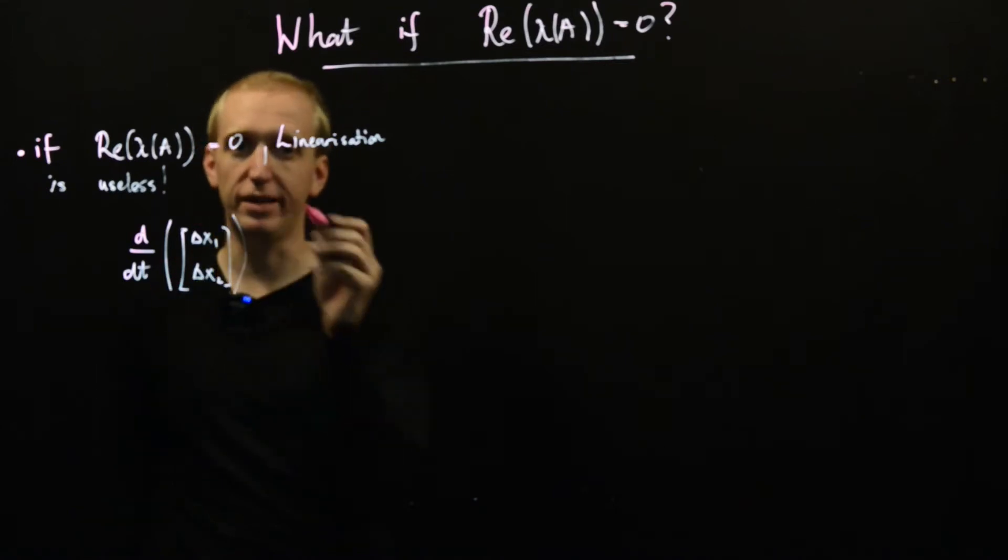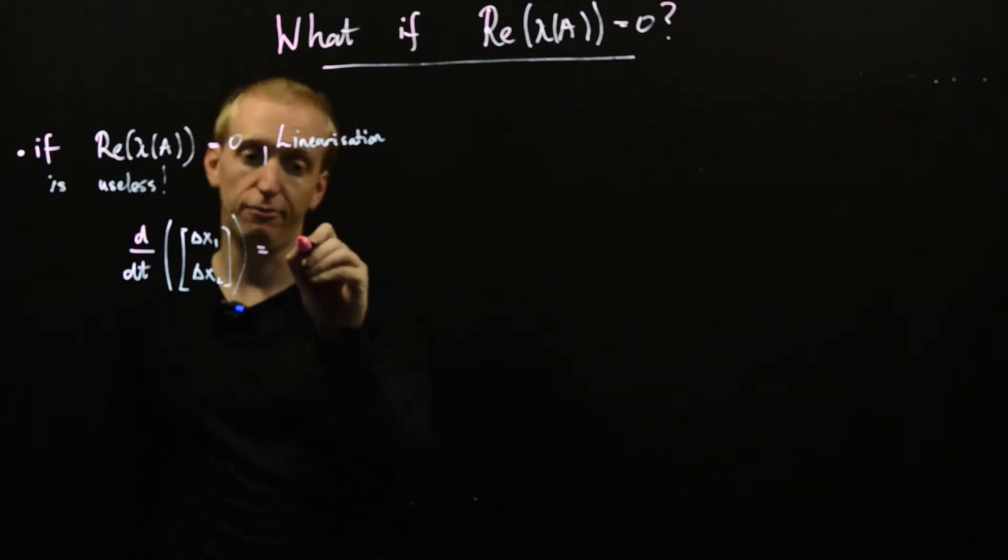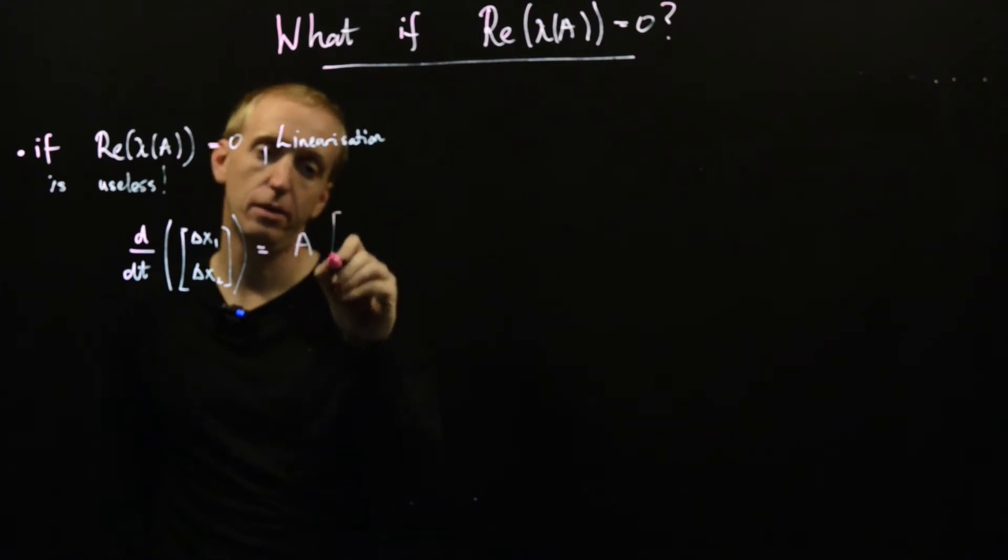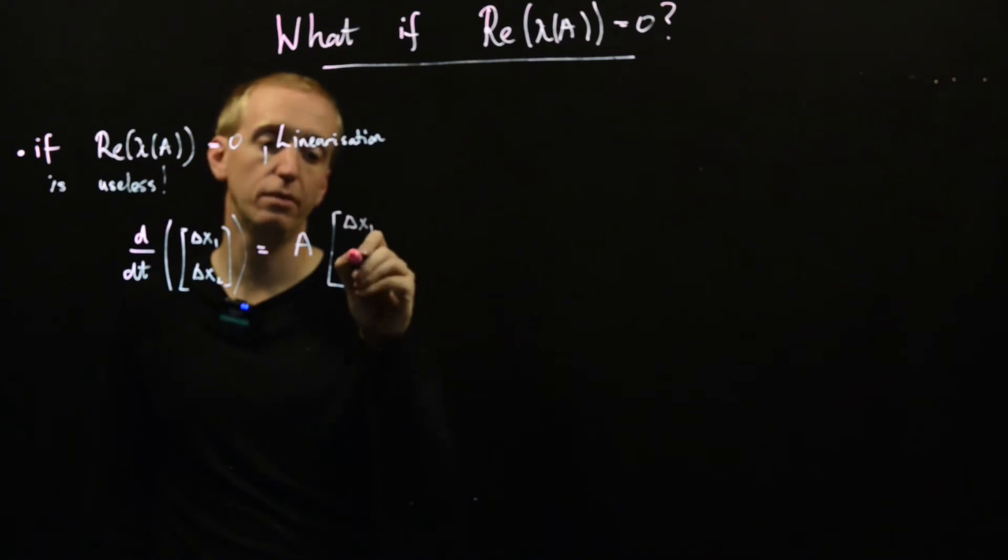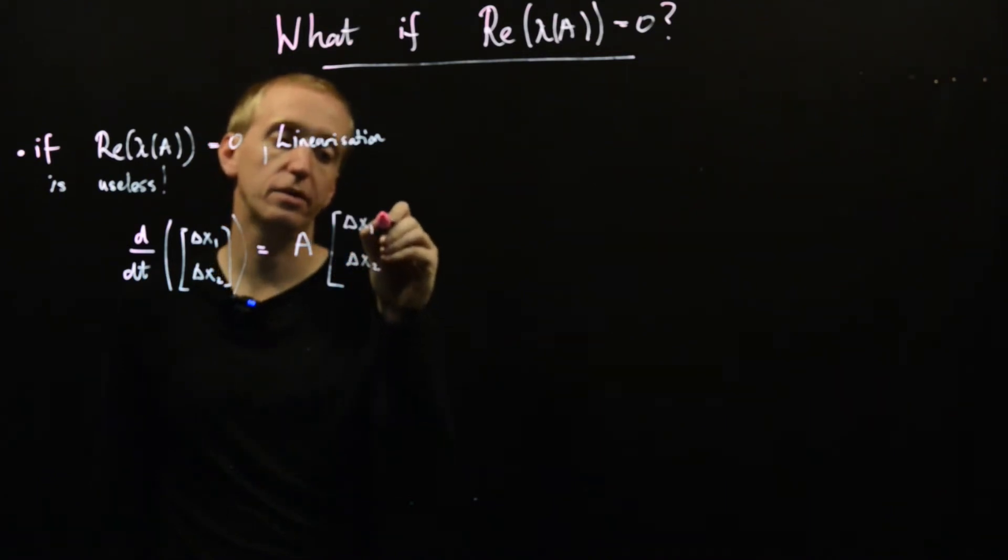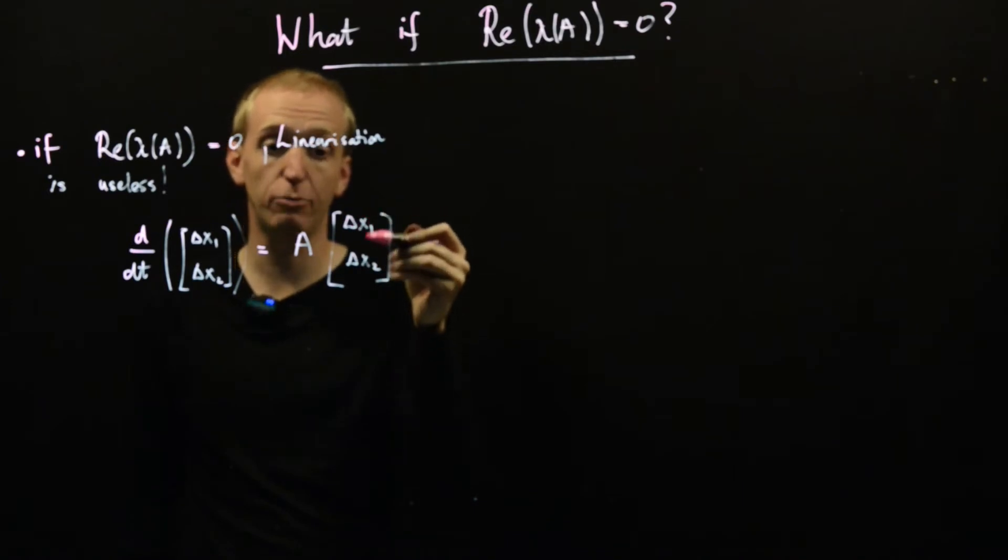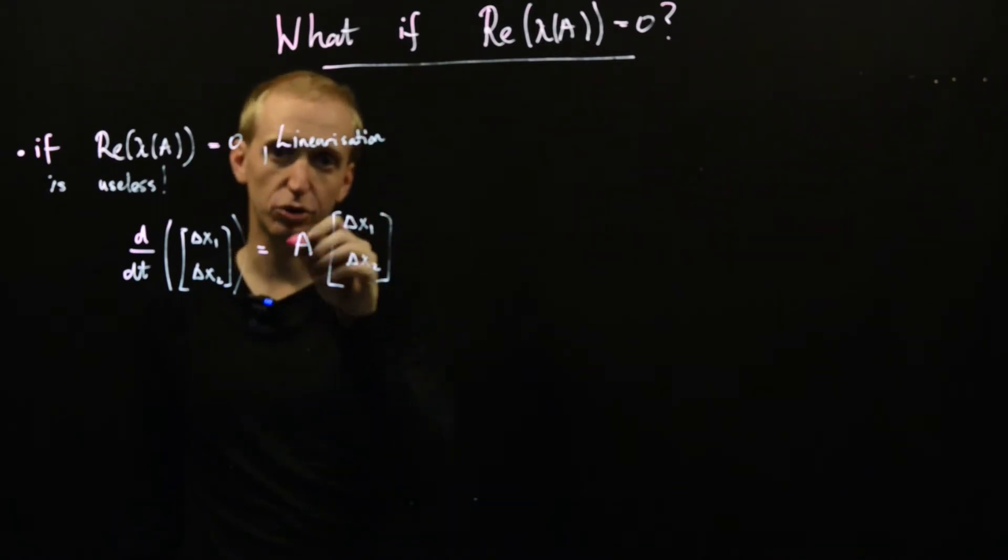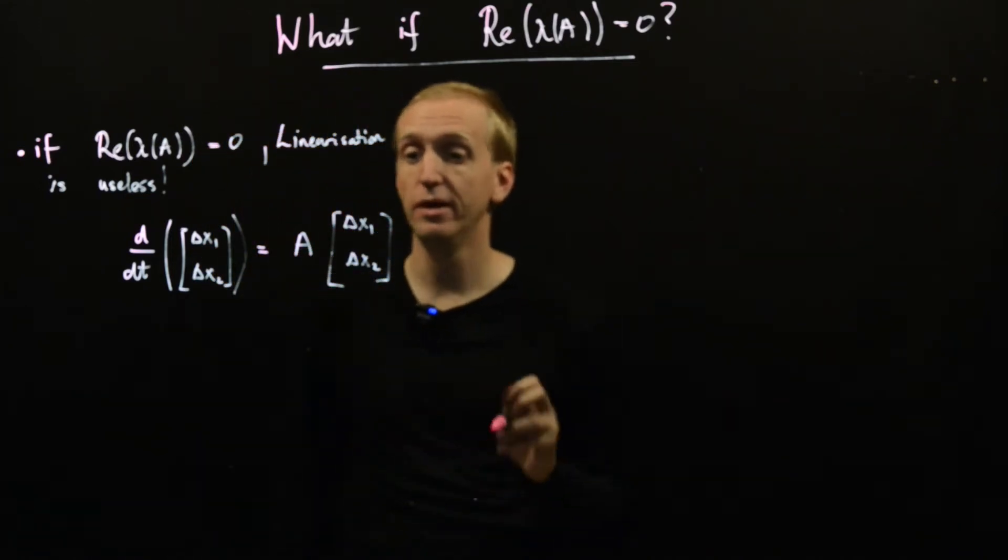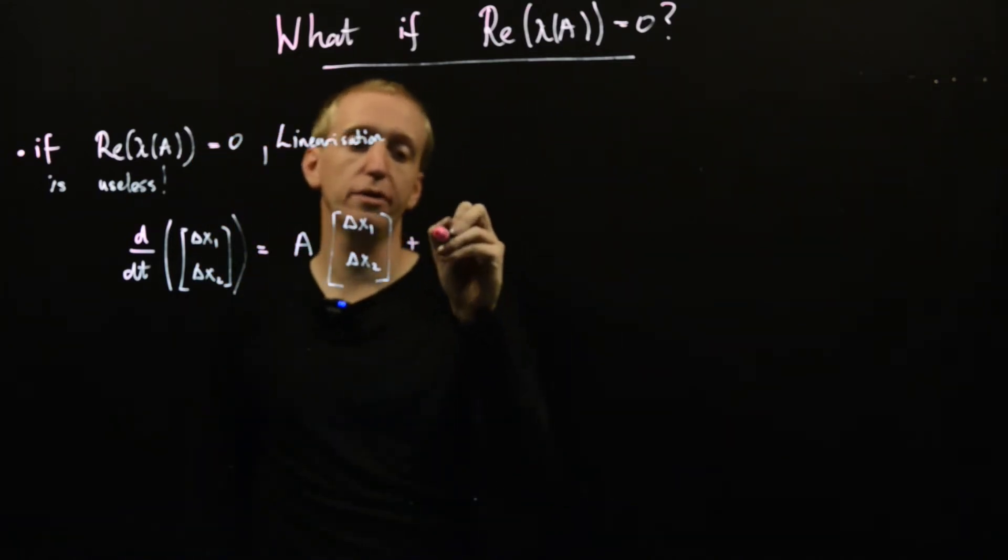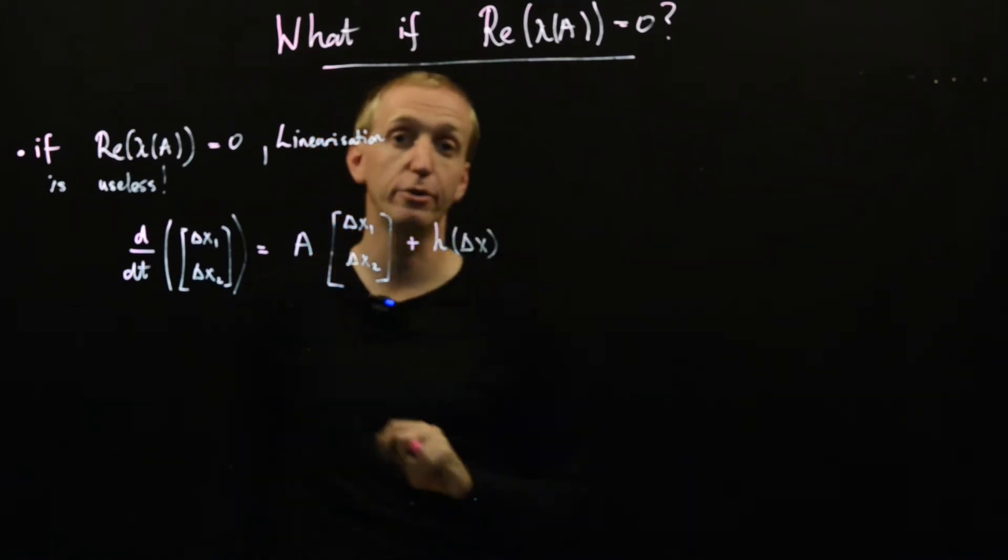And we said that just by changing variables, we could rewrite our system in the form of some matrix A. And here we have delta x1 and delta x2. So something that depends linearly on the deviation from equilibrium. And this we could either just calculate algebraically or through the Jacobian matrix,